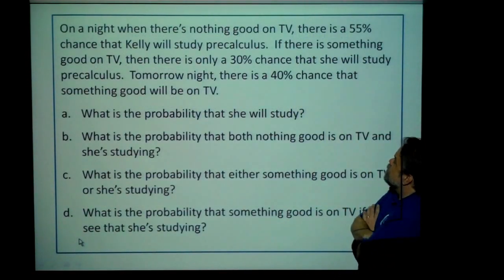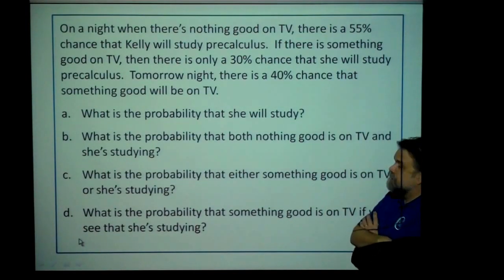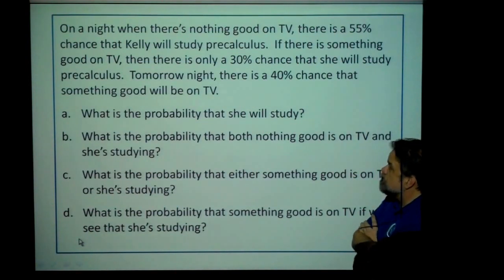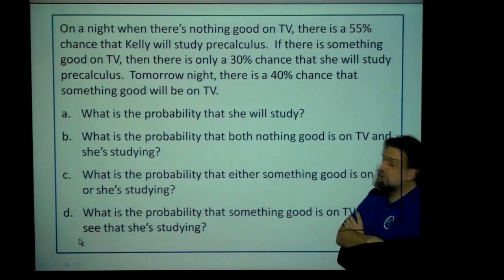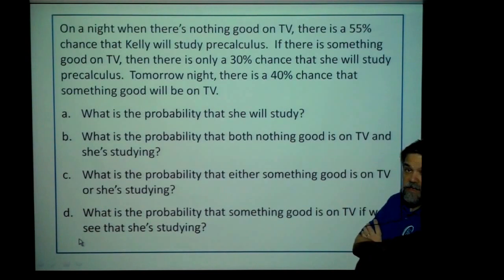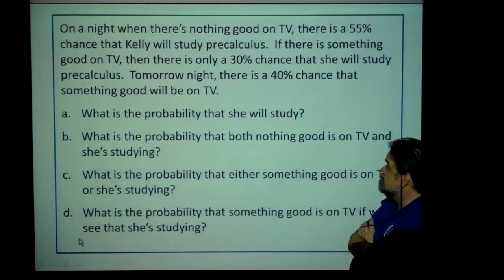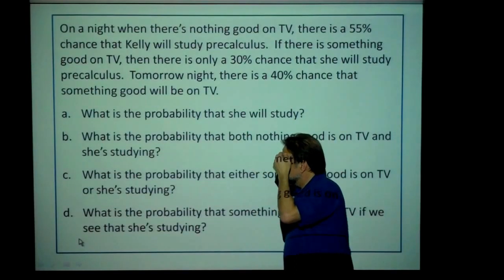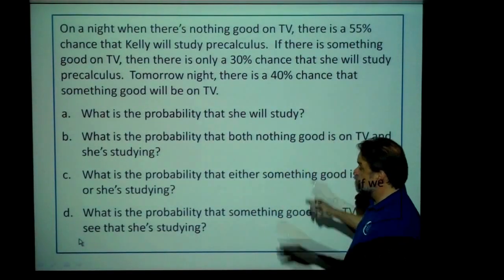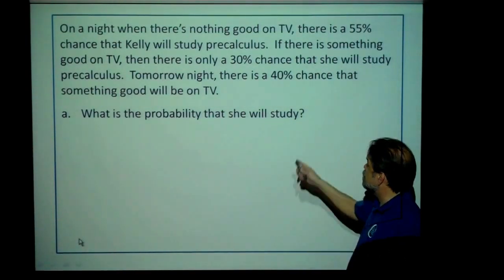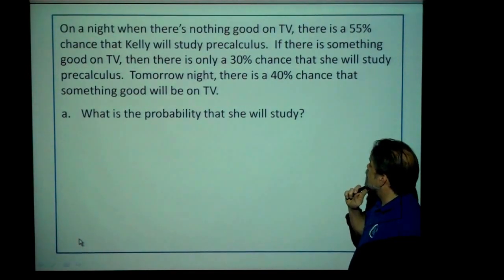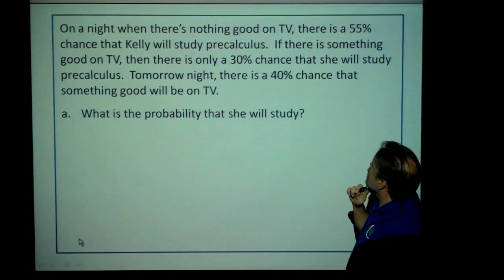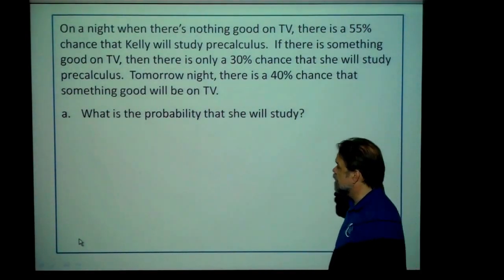Another problem. On a night when there's nothing good on TV, there's a 55% chance that Kelly is going to study pre-calculus. If there's something good on TV, then there's only a 30% chance that she's going to study pre-calculus. Tomorrow night, there's a 40% chance that something good is going to be on TV. We've got four questions, but I'm just going to look at the first one: what's the probability that she's going to study pre-calculus? Well, tree.